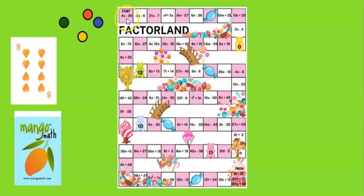So the first player has to start looking at all the expressions until they find one that has a greatest common factor of eight, and here it is 8x plus 16. So the greatest common factor out of this is eight, so they will put their counter on that eight.